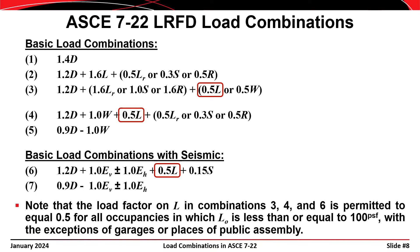Looking at some details in the ASCE 7 standard, the load factor on L in combinations three, four, and six is permitted to be taken as 0.5 for all occupancies in which L0 — the unreduced live load — is less than or equal to 100 pounds per square foot. Live load levels are often in the range of 40 to 70 pounds per square foot, occasionally up to 100. It's only in rare cases that the design live load exceeds 100 psf, so in most cases we can design for 0.5 times L in those combinations.